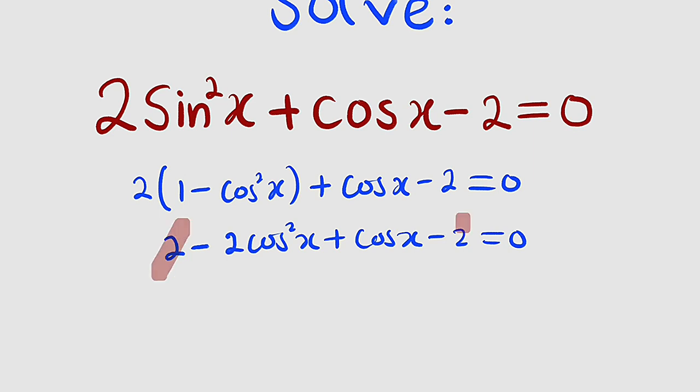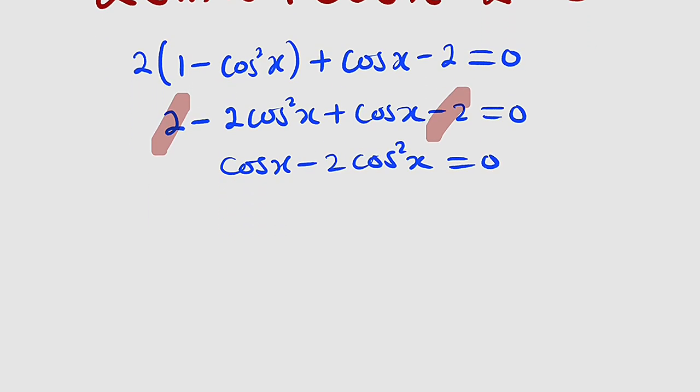From here you can see 2 minus 2 is 0. So let us rearrange this one as cosine x minus 2 cosine squared x. This is equal to 0. But the left hand side can be factorized because we have cosine x in common. So we have cosine x outside, inside we have 1 minus 2 cosine x, and the whole of this equal to 0.